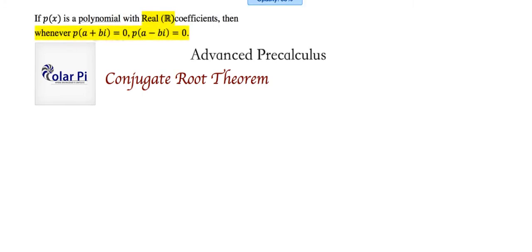It says that if p(x) is a polynomial with real coefficients, then whenever p(a + bi) = 0, p(a - bi) is automatically equal to 0.